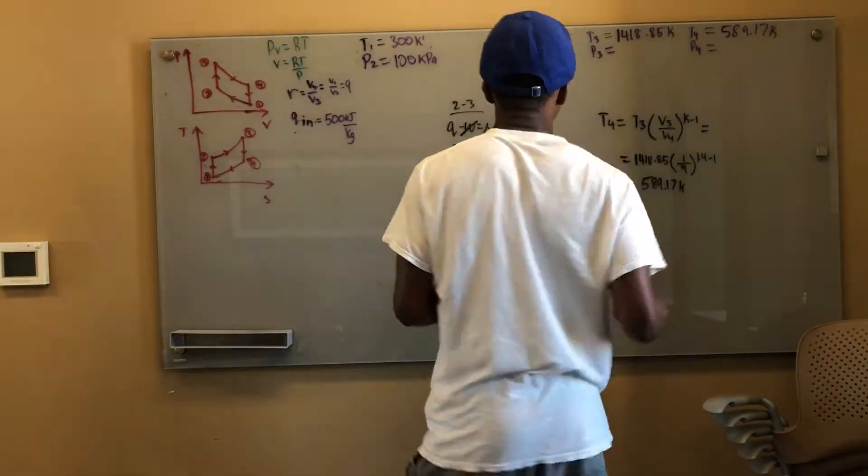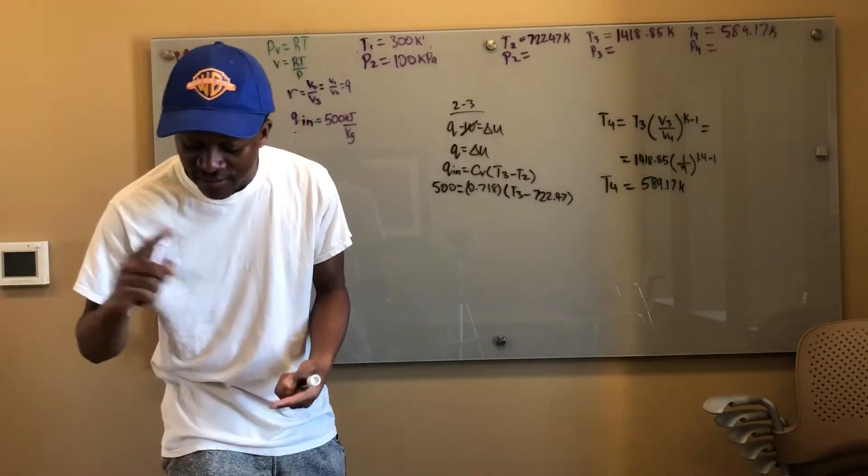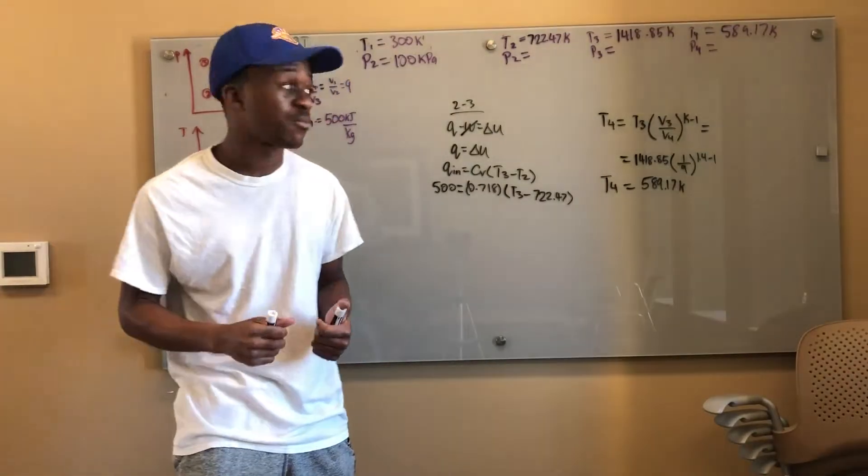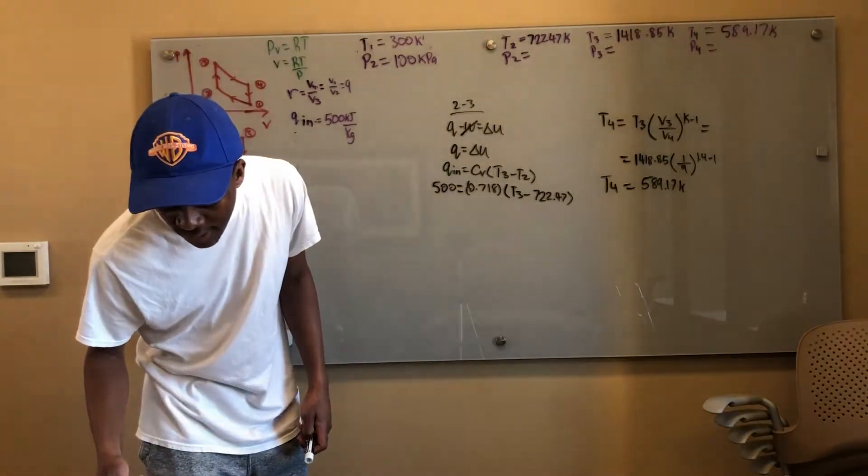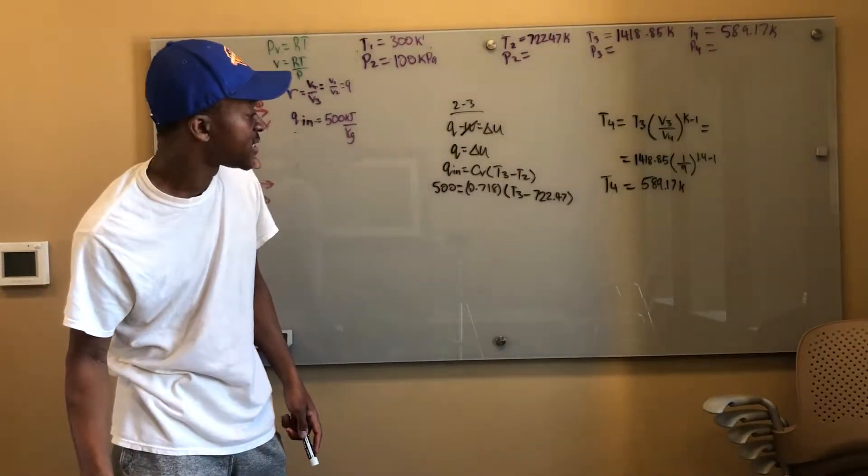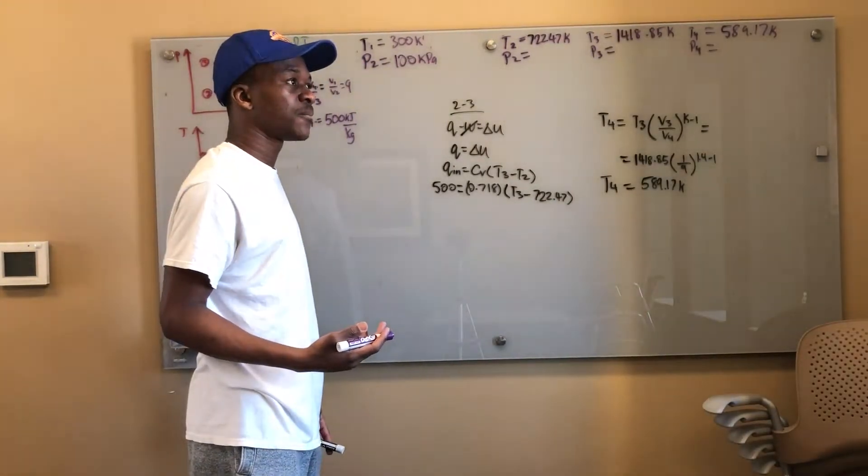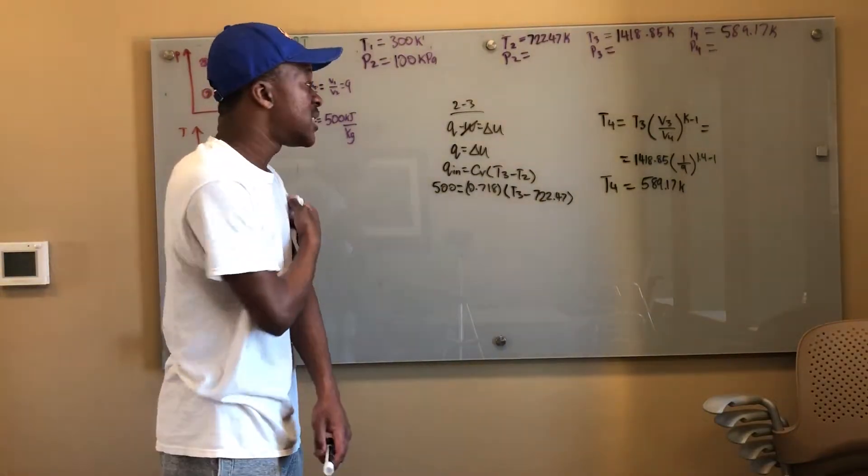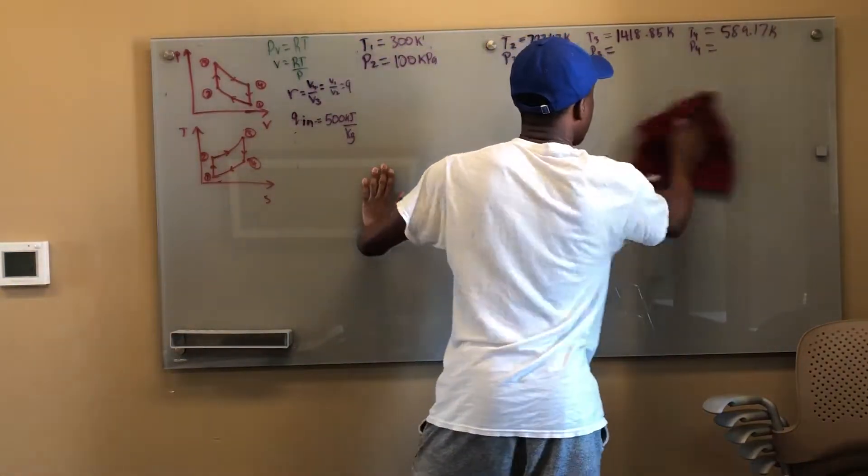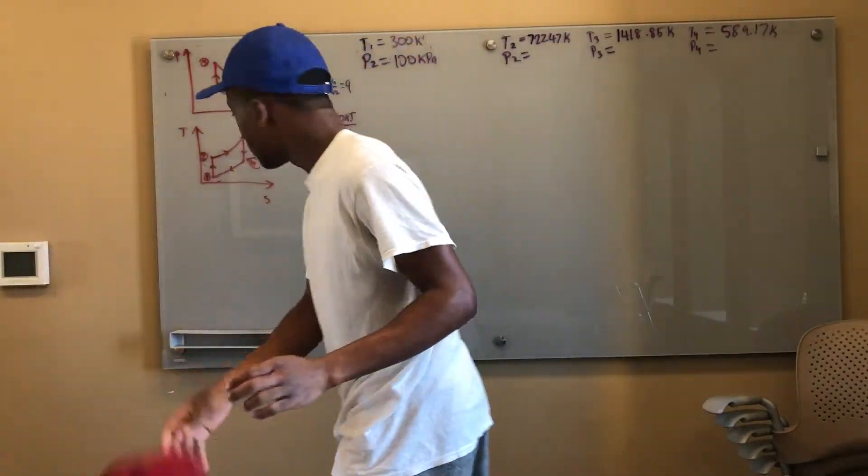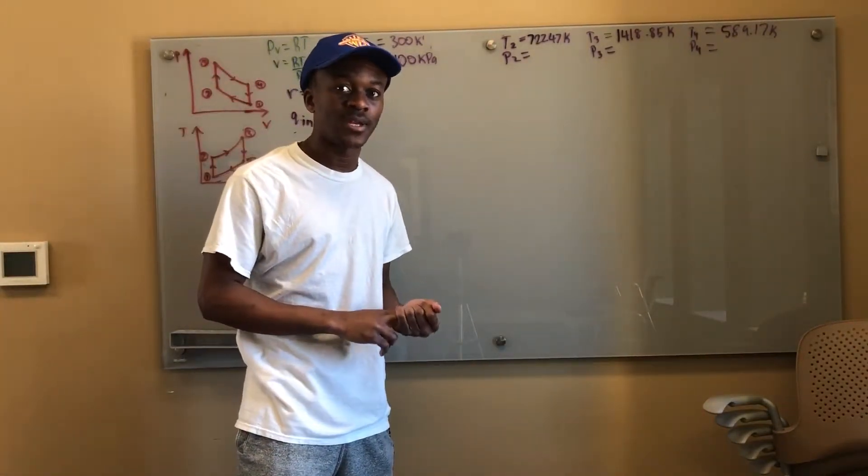Okay cool. So now they asked us for T2, T3, and T4. Those are the temperatures at the end of the compression process and the beginning and the end of the expansion process, compression process, expansion process. Now what is the network produced by this cycle. I have my Q_in, now I need my Q_out and I just need my Q_in and my Q_out. That will give me the network.